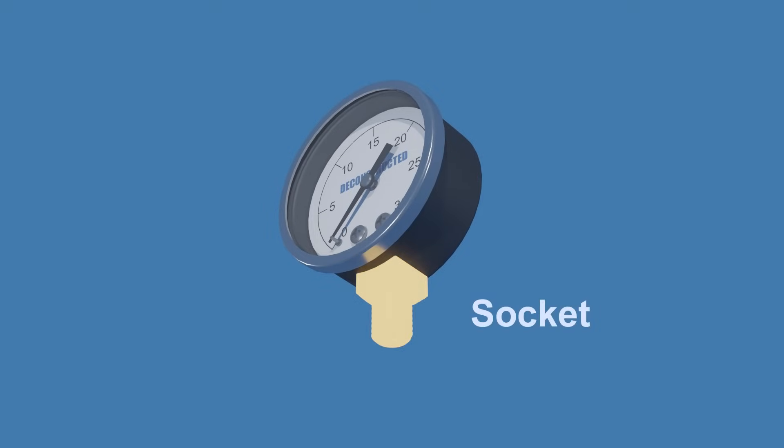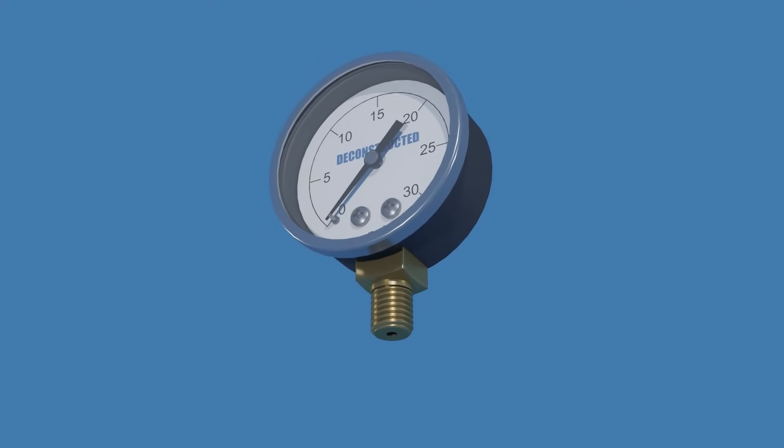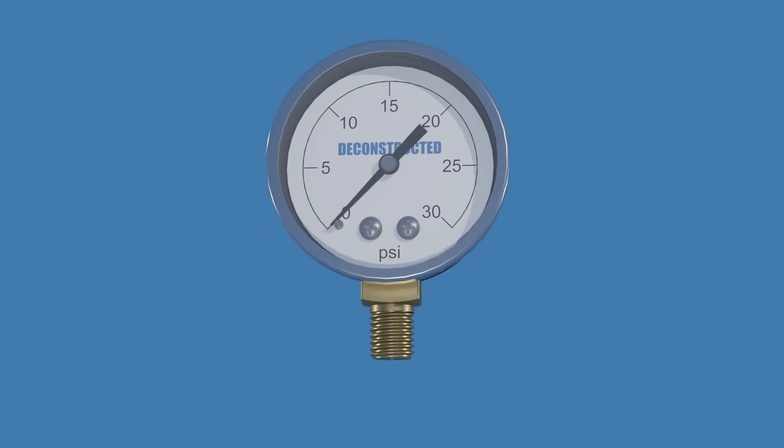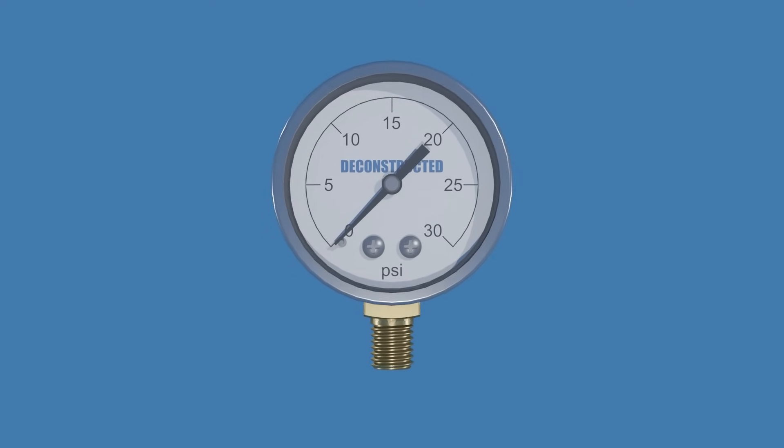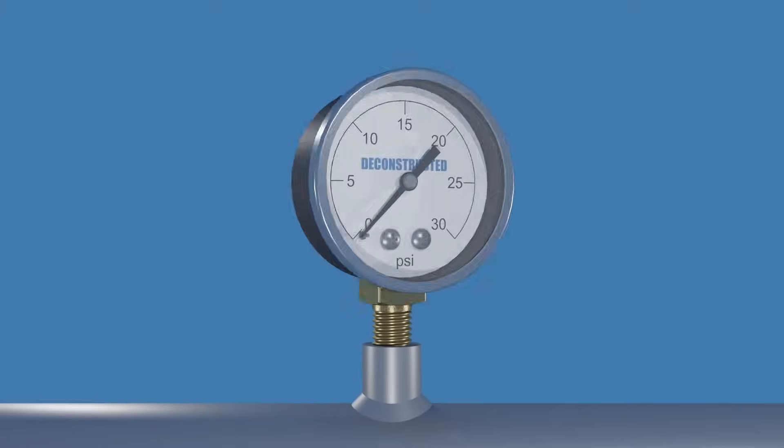This is the socket. It features a small hole at the base, allowing the fluid whose pressure we want to measure to enter the pressure sensing element inside the gauge. The socket's external threads serve the purpose of mounting the gauge onto the process connection port.